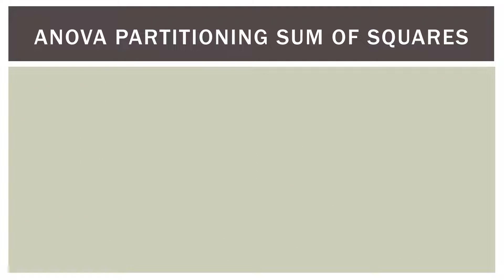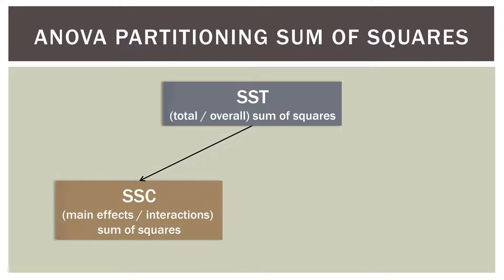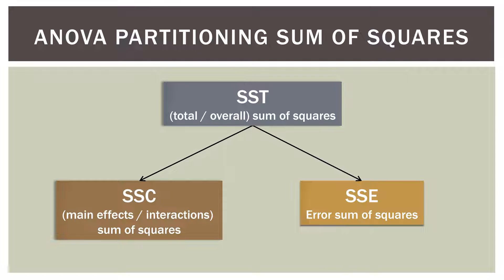Let's go back to ANOVA and how we partition the sum of squares. We have our total sum of squares, which is divided into two things: our main effects and interaction sum of squares, and our error sum of squares. We have a list of main effects, a list of interaction sum of squares, and then the error sum of squares — that's regular ANOVA.